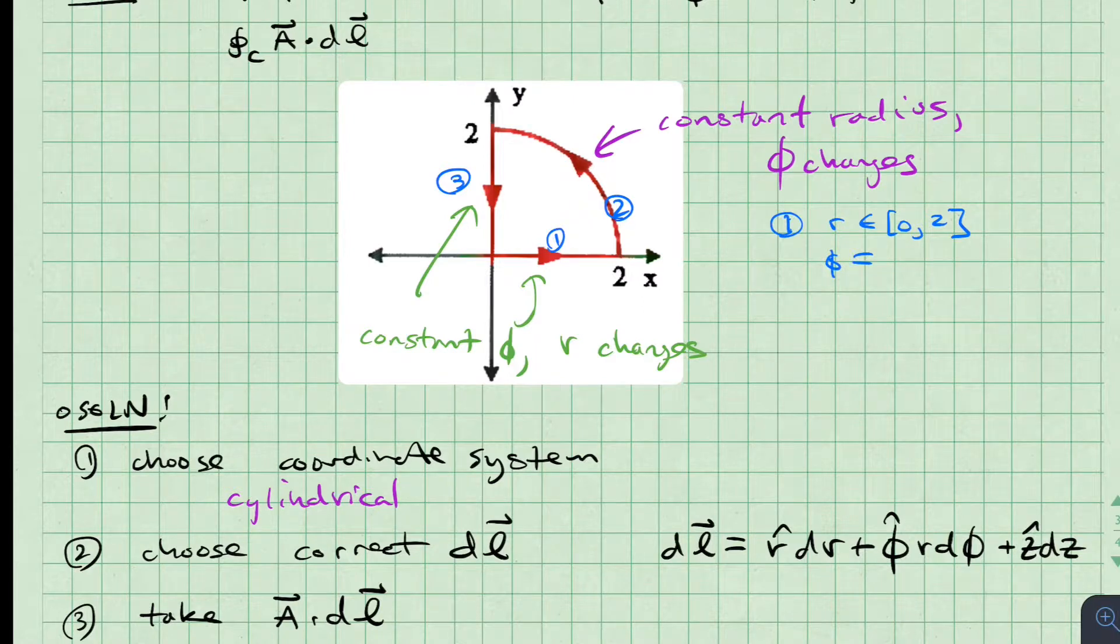In section 1, the radius varies from 0 to 2, and the angle phi is constant at 0. In section 2, the radius is constant at 2, and the angle phi varies from 0 to pi over 2. Finally, in section 3, the radius varies from 2 to 0, and the angle phi is constant at pi over 2.